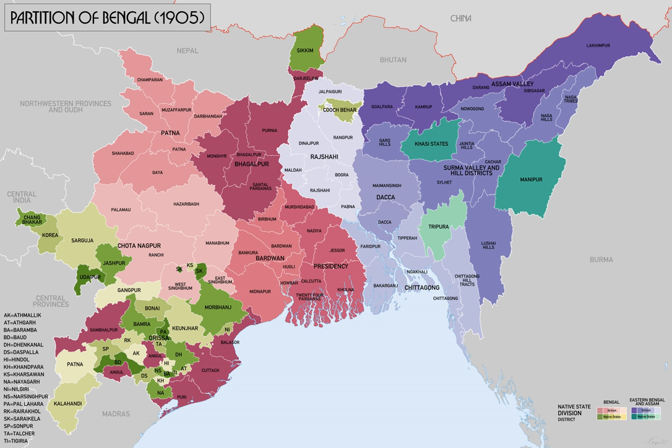The partition animated the Muslims to form their own national organization on communal lines. In order to appease Bengali sentiment, Bengal was reunited by Lord Hardinge in 1911, in response to the Swadeshi movement's riots in protest against the policy and the growing belief among Hindus that East Bengal would have its own courts and policies.